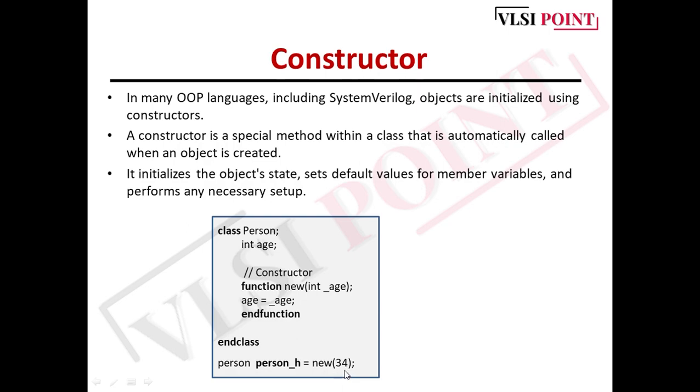Are you getting how this constructor works? Whatever value you want to assign to the class properties, you can assign in that way. If a user is not assigning any value, it will take a default value. The argument we're giving here, most of the time we give a default value so that if the user is not giving any value, by default that argument value will be stored in the property. Otherwise, whatever value is assigned here will be stored in your class properties.